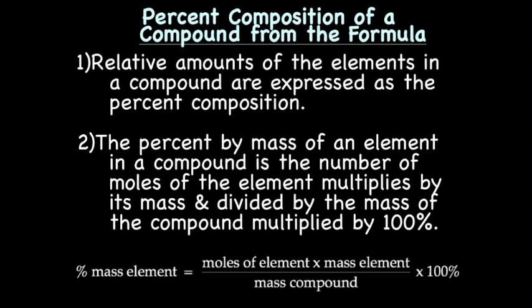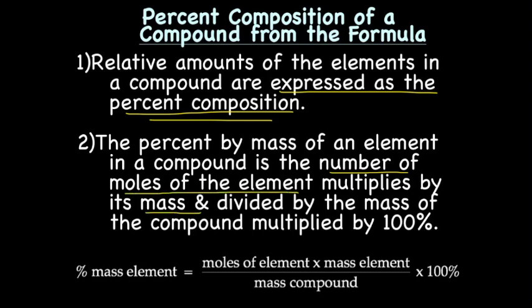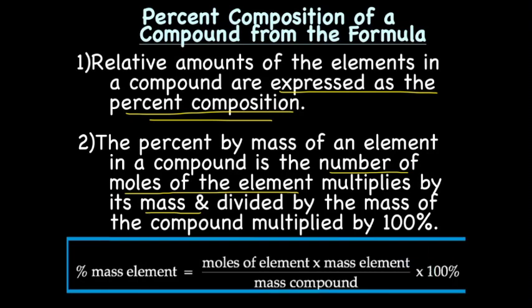Percent composition of a compound from the formula. Relative amounts of elements in a compound are expressed as percent composition. The percent by mass of an element in a compound is the number of moles of the element multiplied by its mass and divided by the mass of the compound and multiplied by a hundred. What I just boxed in is the actual formula. Percent mass of an element equals the moles of the element times the mass of the element divided by the mass of the compound multiplied by one hundred.